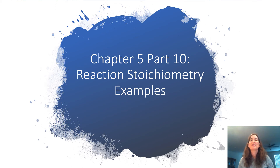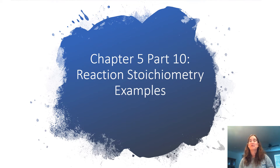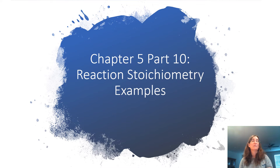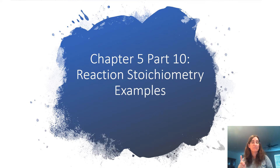Hi bobcats, in this video we're going to work several examples of reaction stoichiometry calculations. You can refer back to the previous video for the details of the process. Just a quick review: when we're looking at the problem, it should mention a calculation that involves two different chemicals — maybe you start with an amount of a reactant and it asks you to find how much of a product could be made, or if you want to create so much of a product, how much of a reactant do you need.